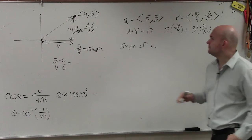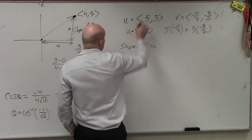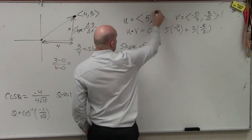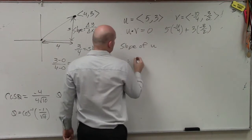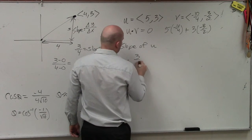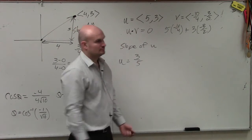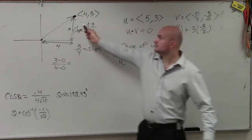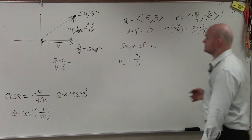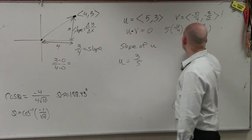So you have the slope of u. So again, slope of u is going to be the change in y over the change of x. Since it's in component form, it's changing from 0, 0. So the slope of this is 3 over 5. Just like I did over here, the y over the x.